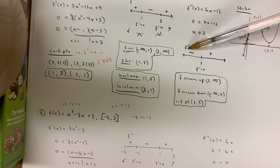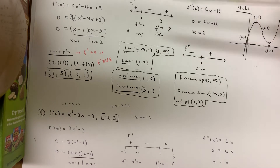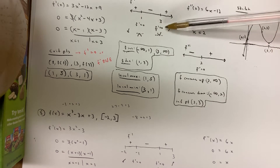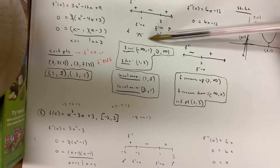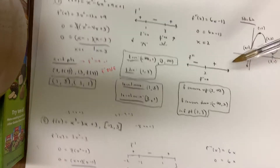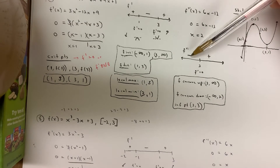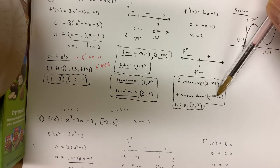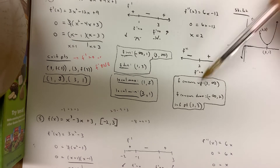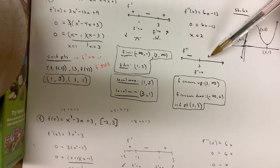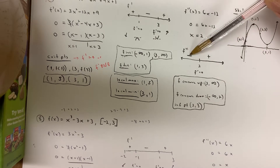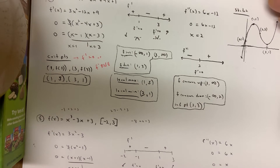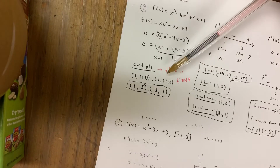The second derivative piece was what was new — it's really the same thing as the first derivative test, only you use the second derivative and it's a lot more clean. You don't have to worry about the dummy sketch. Remember: if f double prime is negative, f is concave down; if f double prime is positive, f is concave up. Only when f double prime changes sign do you see that inflection point.